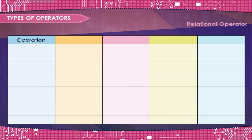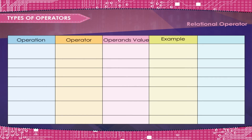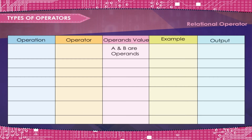Operation, operator, operand value, example, output. A and B are operands. If is a conditional statement.